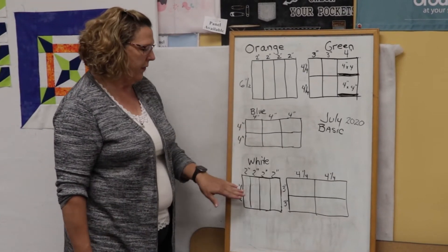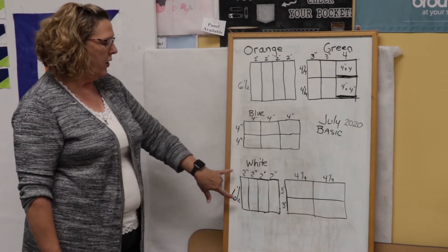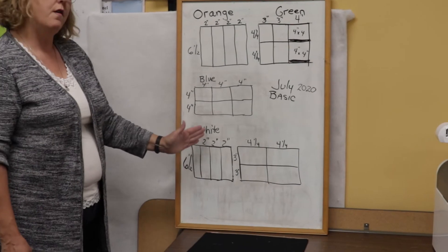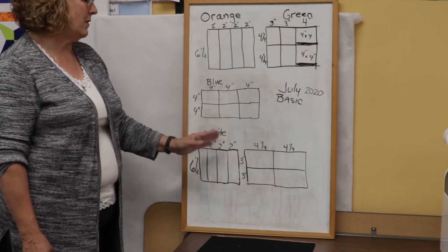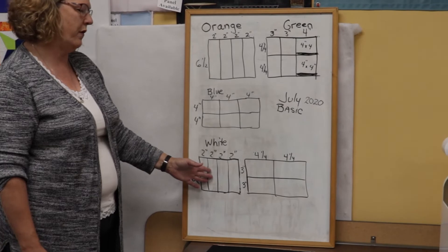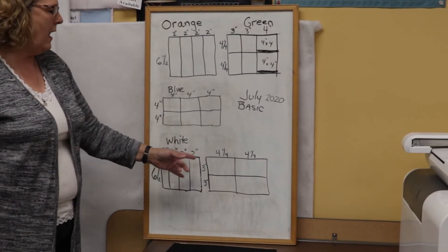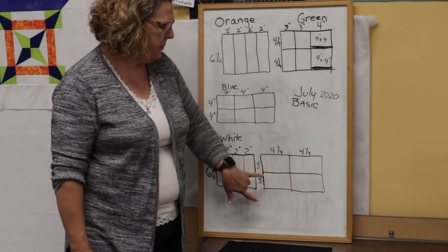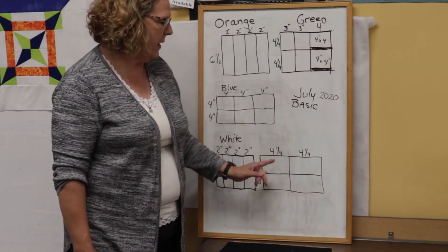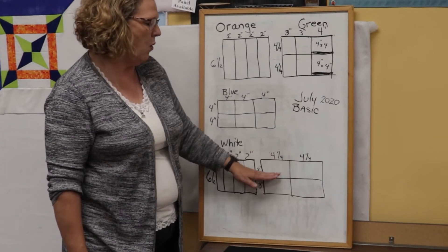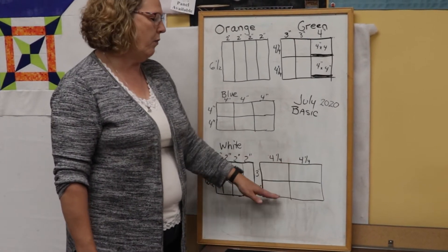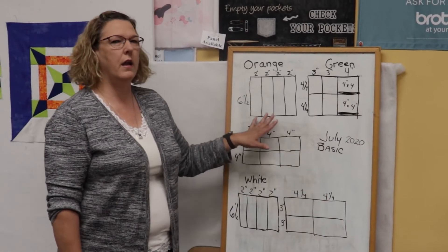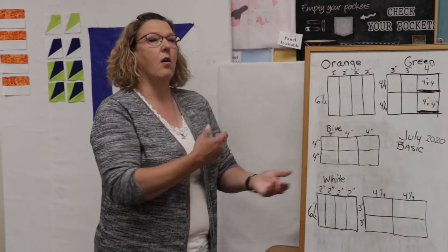The white fabric, a couple different cuts here. You're going to cut your long strip 6½ inches wide. And again, four 2-inch strips just like the orange. Those are for the sides. And then we're going to cut this down to a 3-inch strip and another 3-inch strip. And subcut those into 4¼ wide. Again, four rectangles that are 3-inch by 4¼. And all the cutting that you need are on your directions.